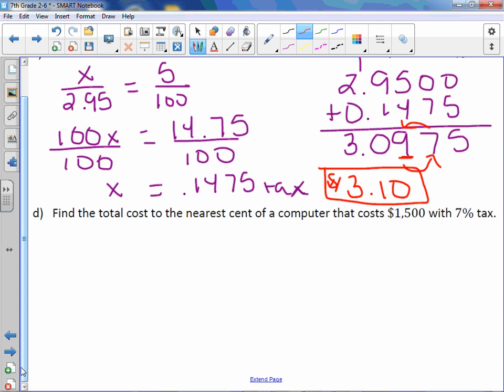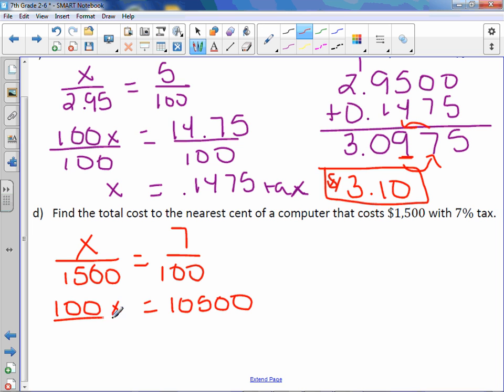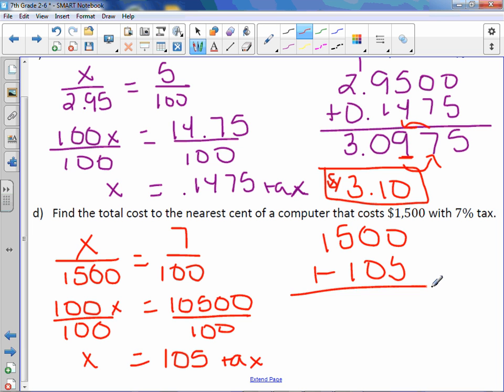Letter D. Find the total cost to the nearest cent of a computer that costs $1,500 with 7% tax. 1,500 is the total cost before tax. 7 is a percent, so it goes over 100, which means the part is what we are finding. Cross multiply. 100x equals 1,500 times 7 is 10,500. Divide by 100. We get x equals $105. And this is the tax. You take your price of $1,500 plus $105. You get $1,605. It says to round to the nearest cent, so we are just going to put our two zeros after that.